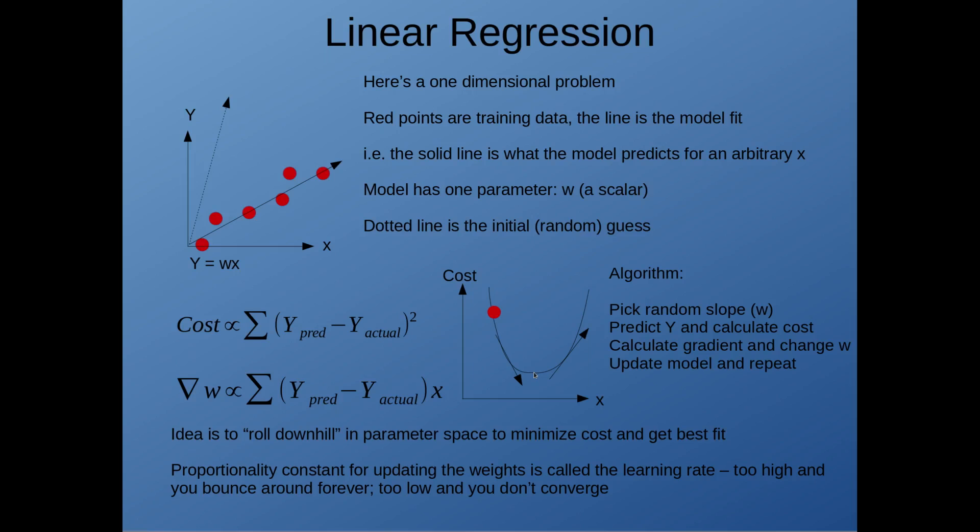Our algorithm is to start out by picking some random slope w, use that to predict an output y for every x, and calculate the cost associated with that. Then we calculate the gradient and see which direction we have to move in parameter space. And then we update the model and repeat the process of prediction and calculating costs.